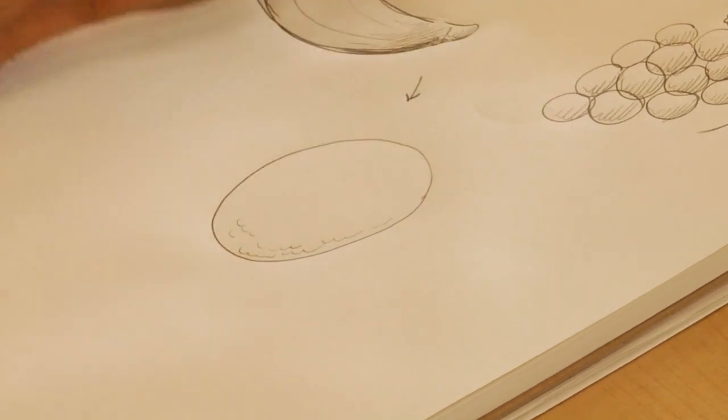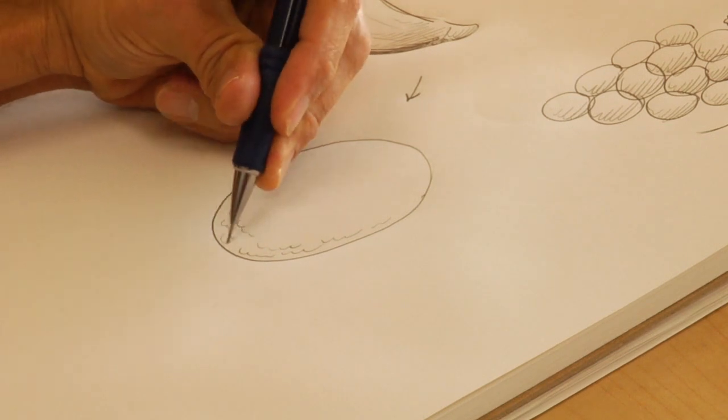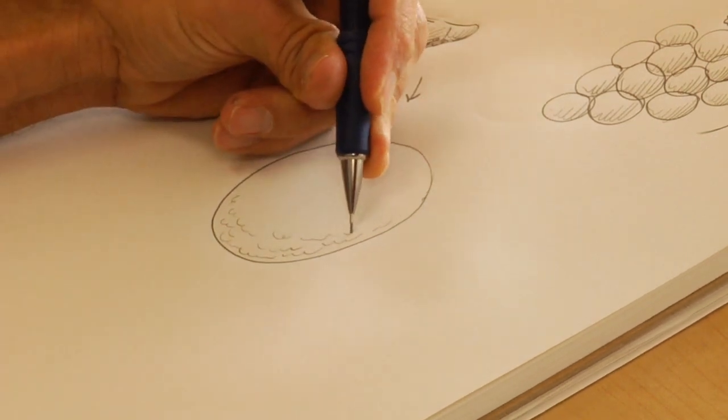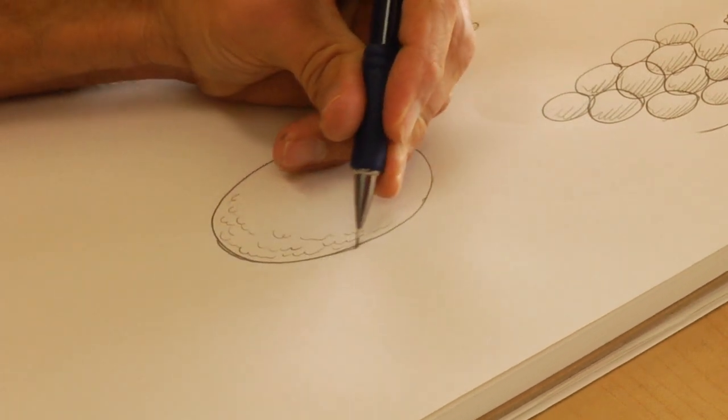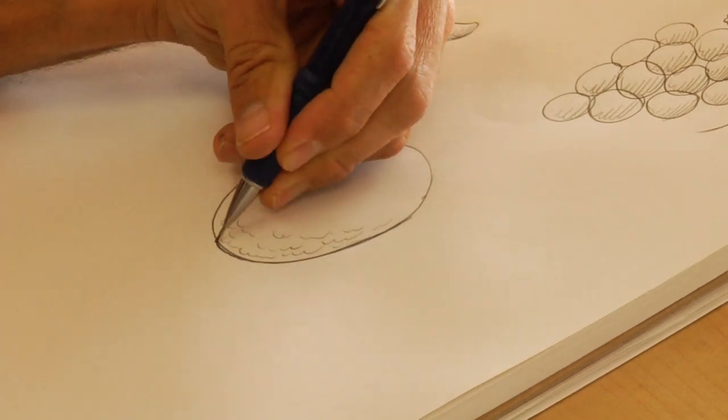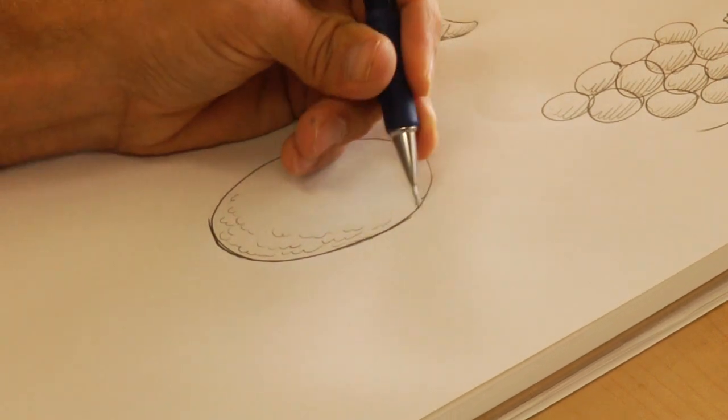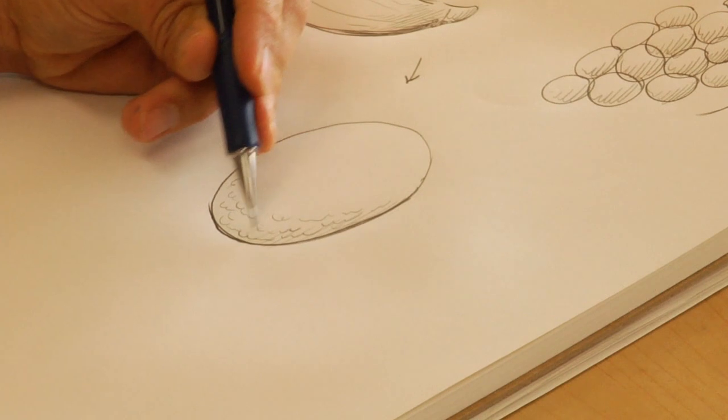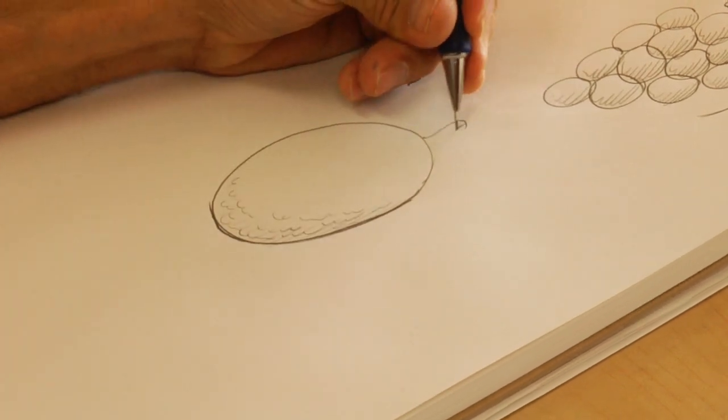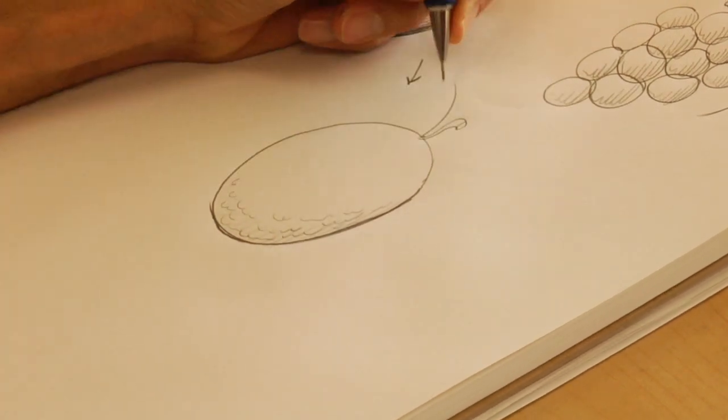a couple of squiggly lines on the side of the circle that the light isn't hitting, and then you shade the bottom half to kind of give it a little bit of weight. Okay, and then you can put a little stem out the top and a leaf.